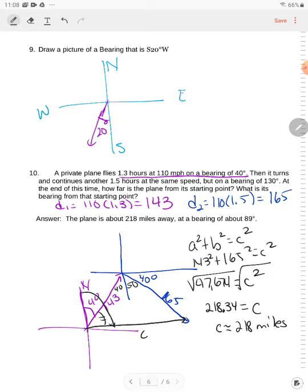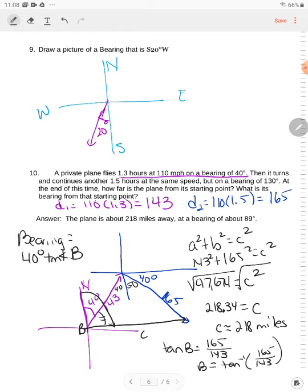Now to find that angle I've marked, let's call this angle B here. If I use the original numbers, tangent of B is equal to 165 over 143. That means B is equal to tangent inverse of 165 over 143. Now your bearing is equal to the 40 degrees plus angle B, measure of angle B. So if we do tangent inverse, we get approximately 49 degrees. So B is approximately 49 degrees, rounding to a whole number. So we're going to do 40 plus 49, which is 89 degrees. So my bearing is equal to 89 degrees.